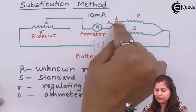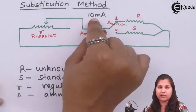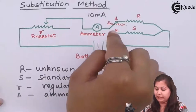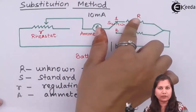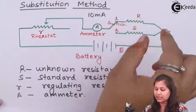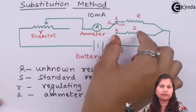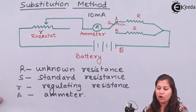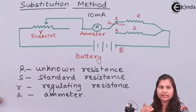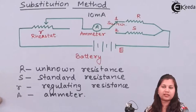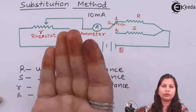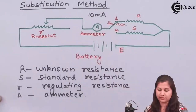When the same deflection — that is, the same current of 10 milli amperes — is obtained, it means that the value of the unknown resistance is equal to the value of the standard resistance. Through this substitution of the resistance, we are measuring the unknown resistance.